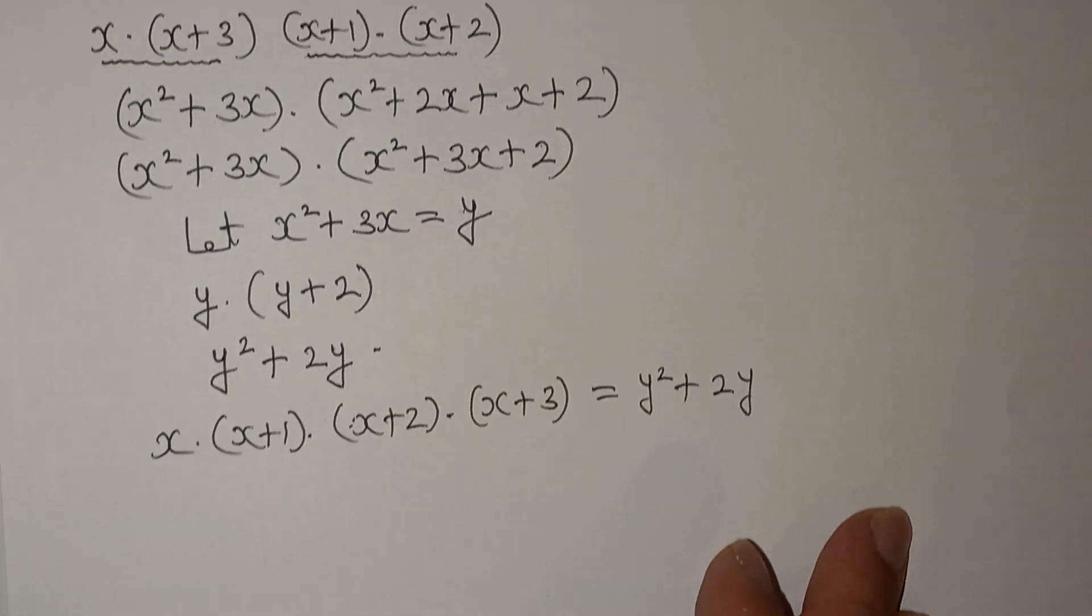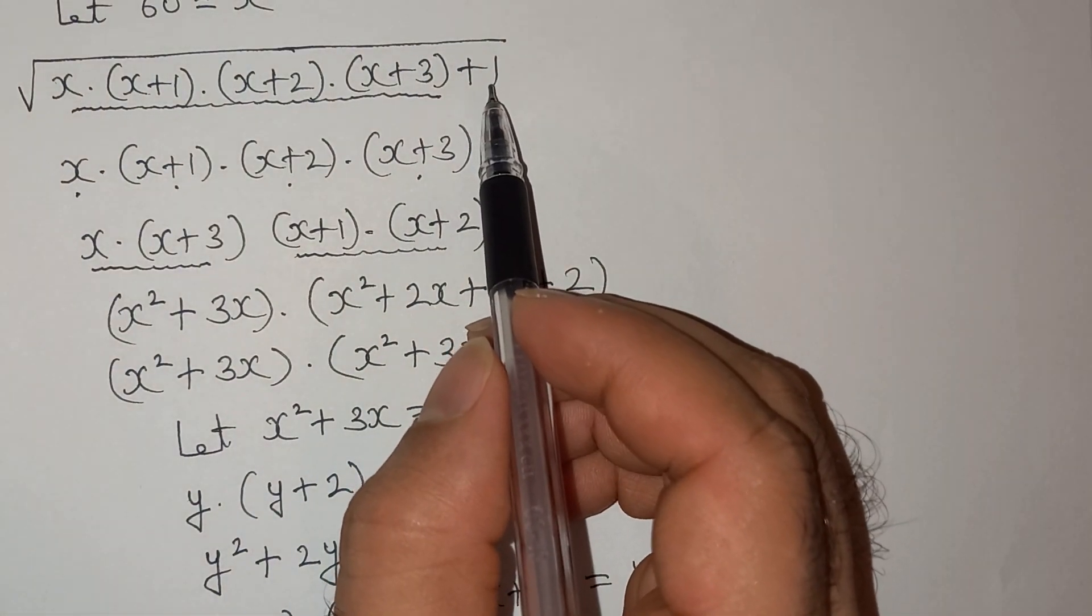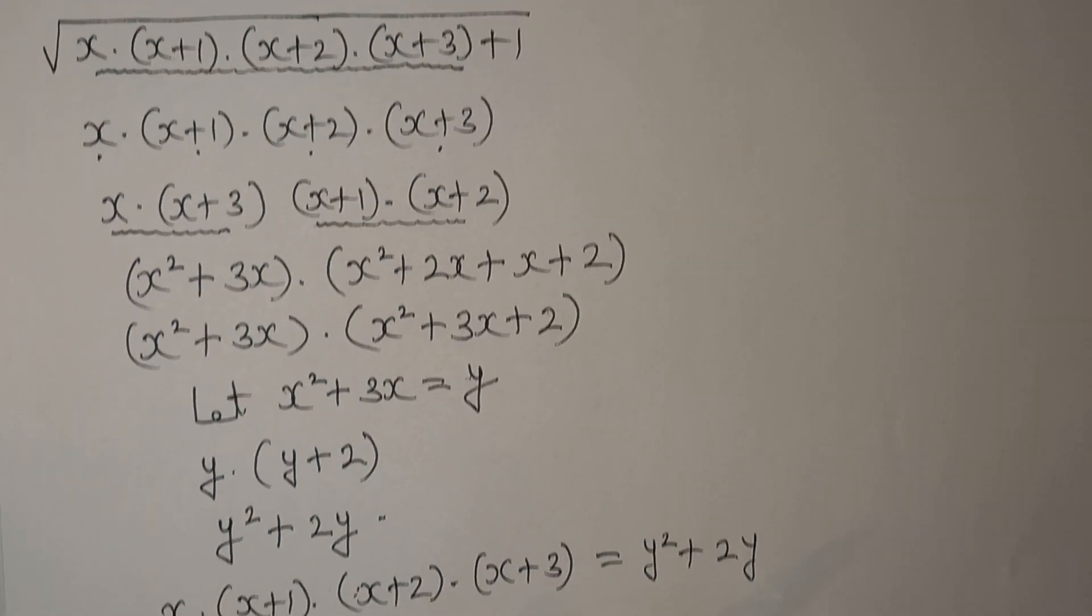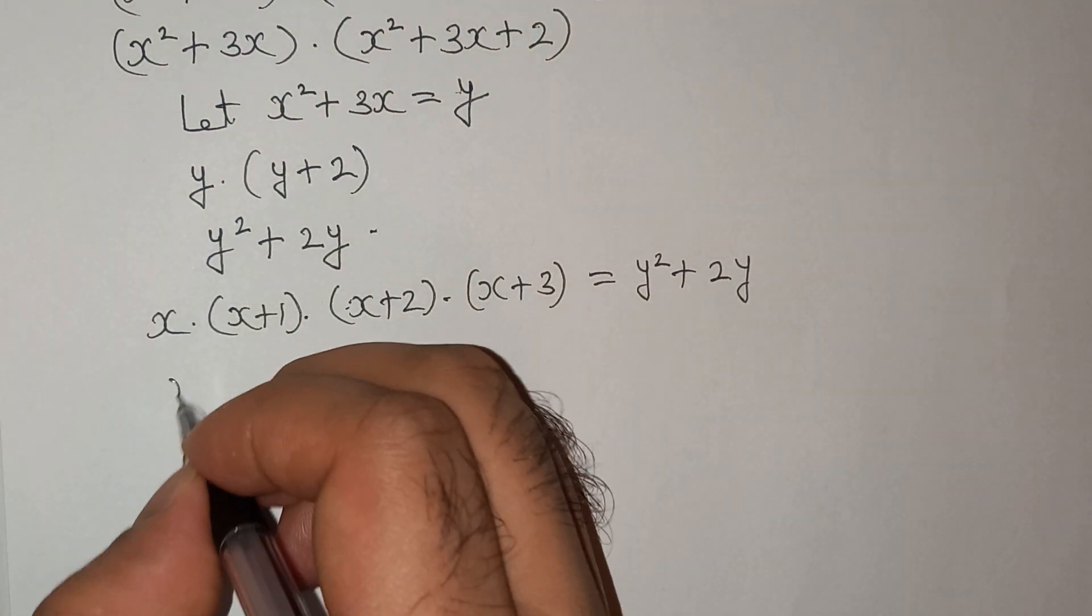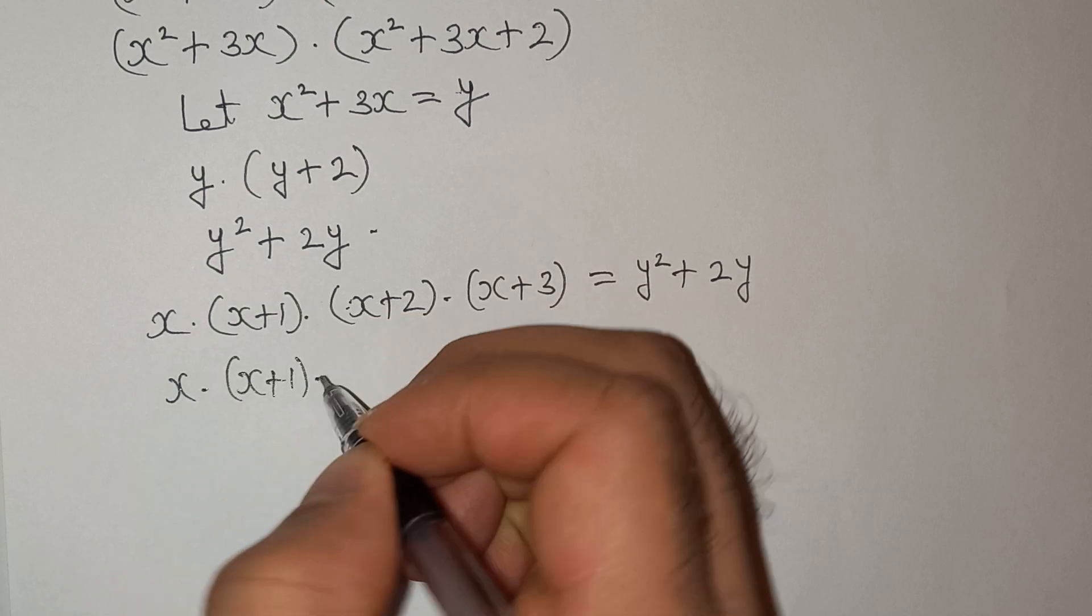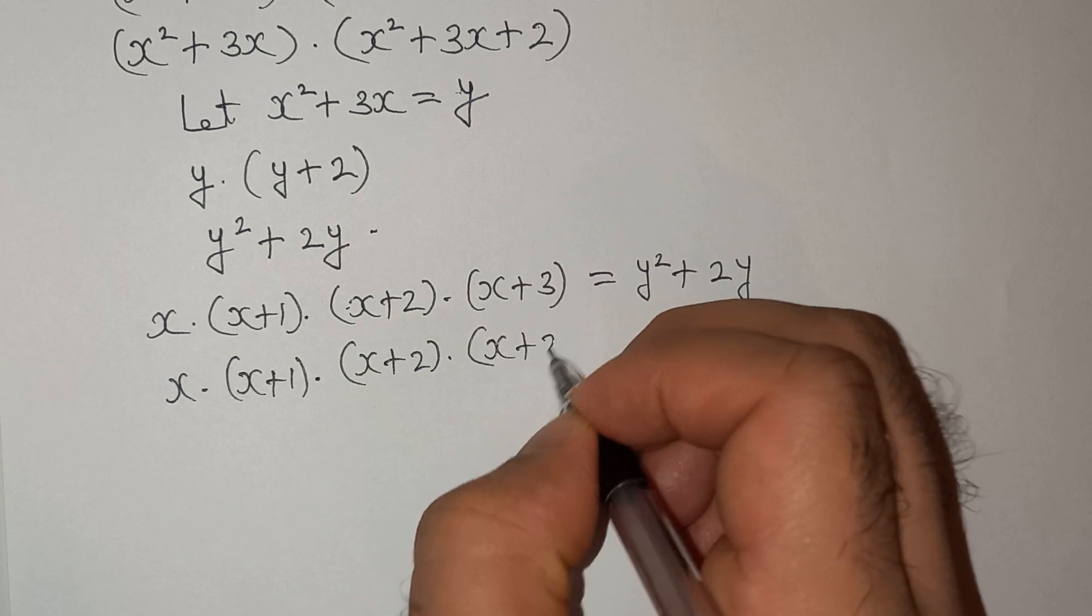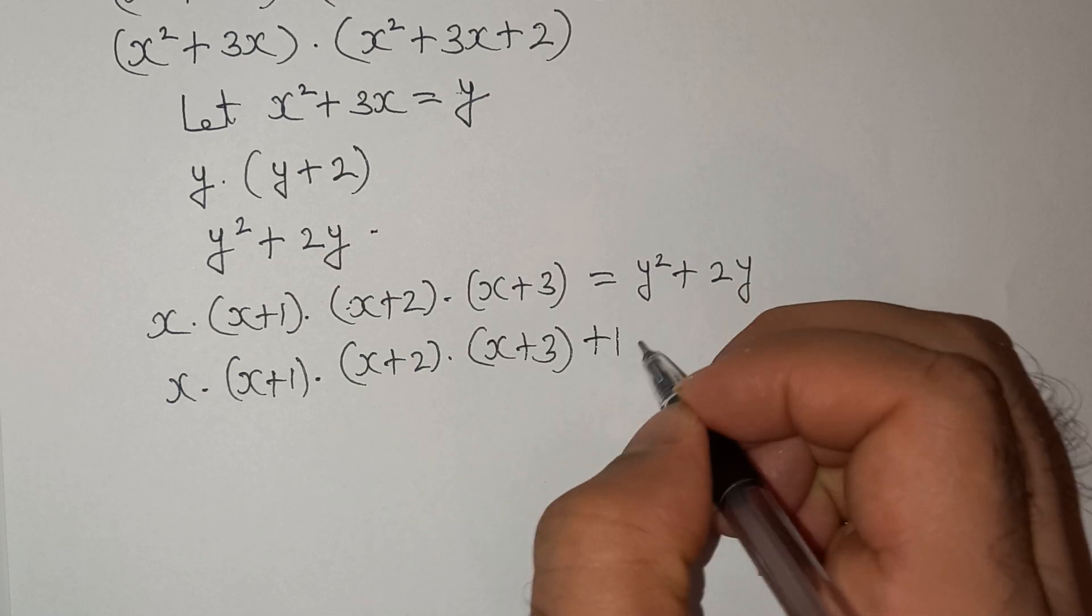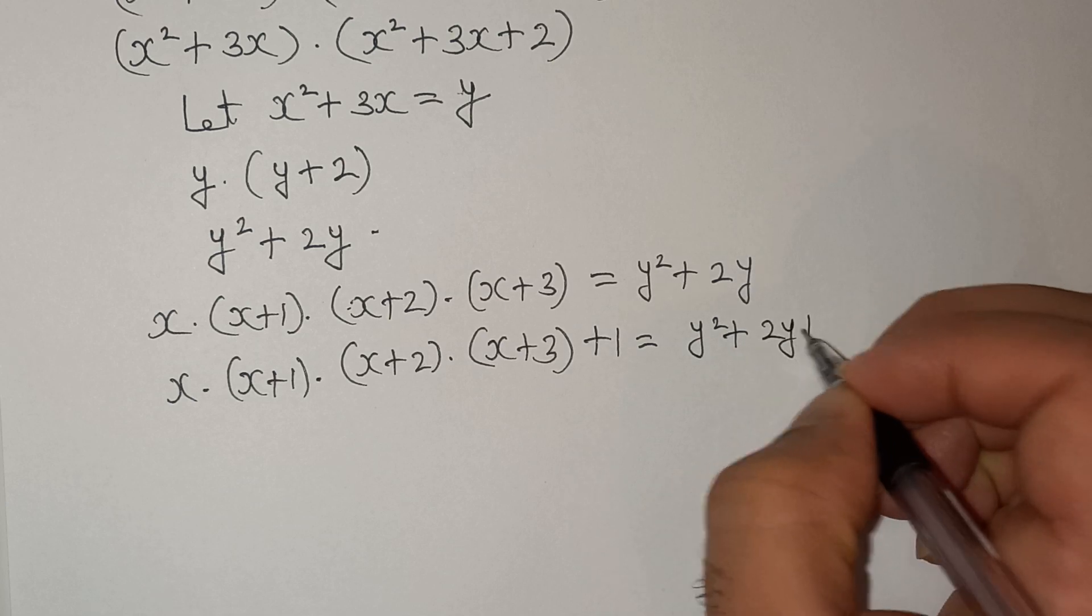Now as you can see, we have to add this 1. So this will be x(x+1)(x+2)(x+3) + 1 equals to y² + 2y + 1.